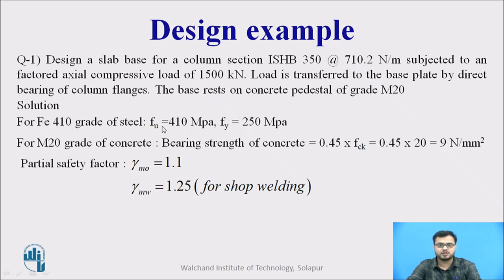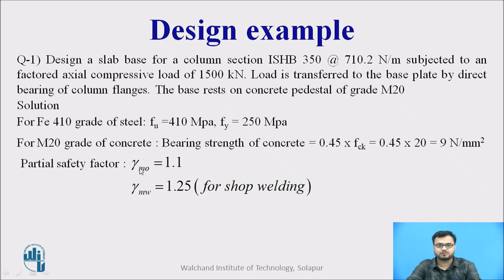The solution: first, we assume grade of steel as Fe 410. For Fe 410, fu (ultimate tensile capacity) equals 410 MPa and yield strength fy equals 250 MPa. For M20 grade concrete, the bearing strength as per code equals 0.45 fck = 9 N/mm². As per IS 800:2007, the partial safety factor for material γm0 = 1.1 and γmw = 1.25 for shop welding.